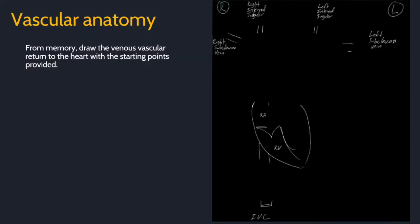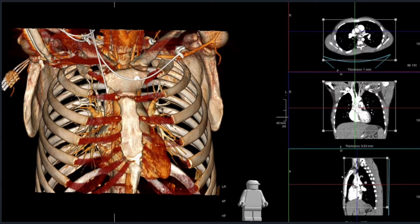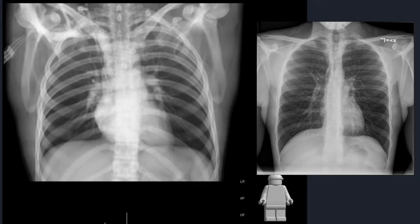Moving on to vascular anatomy. In order to read a radiograph, you need to have a good anatomical knowledge of vascular anatomy in the chest, specifically venous anatomy. Pause the video and from memory, draw the venous vascular return to the heart with the starting points provided. The subclavian and jugular veins both confluence to brachiocephalic veins, which form the superior vena cava, which empties directly into the right atrium. Don't forget about the azygous vein from posterior. Inferiorly, the hepatic veins join the IVC to empty into the right atrium. Here, I made a 3D rendering from a chest CT with contrast after injecting contrast via the right arm. From this, I made a virtual radiograph of that study to highlight the same vascular anatomy on chest radiograph.